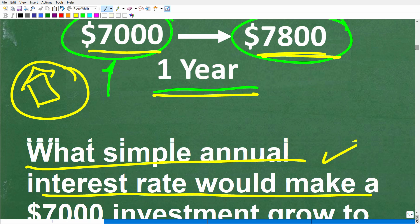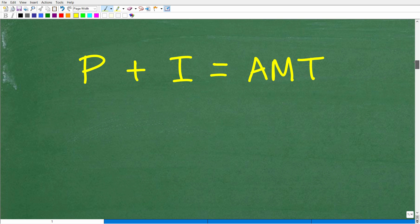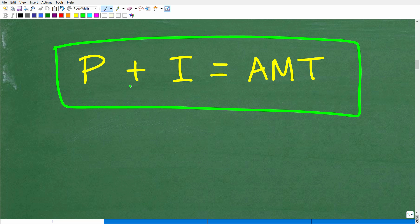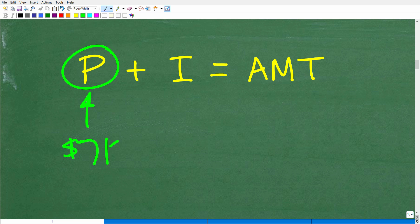Let's get some basics down because we have an investment situation and a simple interest situation. Here is the basic formula for simple interest: P plus I equals the amount. P is what we call the principal amount — how much money you have saved up, worked hard for, and want to invest. In this particular problem, we're talking about $7,000. This is our principal amount.